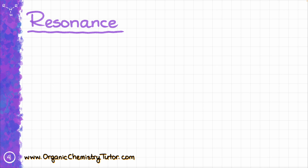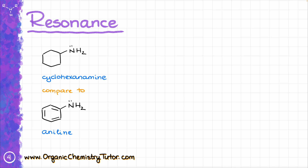The first factor I want to talk about is resonance. I'm only going to be interested in resonance that involves the electron pairs on the nitrogen atom. For instance, if I look at cyclohexylamine and compare it to aniline, the electron pair on nitrogen in cyclohexylamine is localized — it does not participate in any resonance — while the electron pair in aniline is delocalized, because those electrons can participate in resonance and jump into the aromatic ring. Make sure you can draw all those resonance structures yourself, and review this topic if you feel rusty, because it is huge for amine basicity.